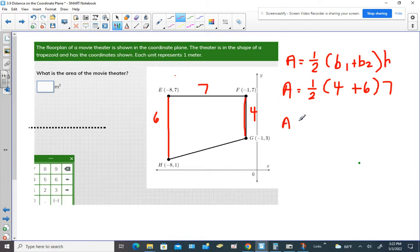Now if we finish this up, we're going to add the parallel sides together. 4 plus 6 would give us 10. And then we have to multiply by 7.